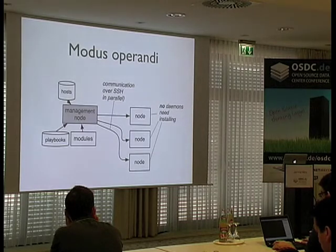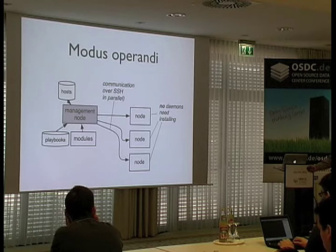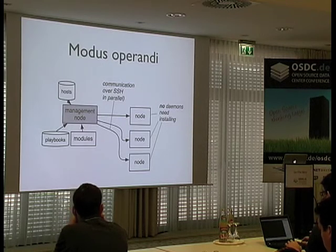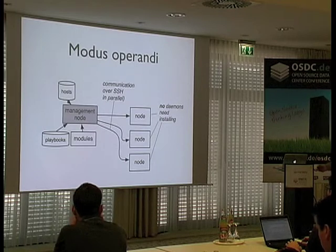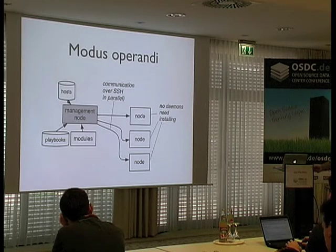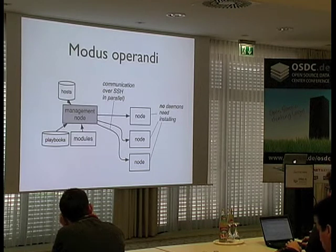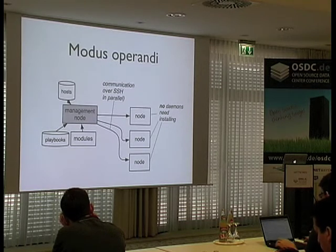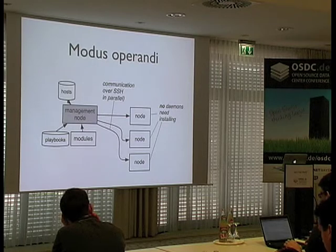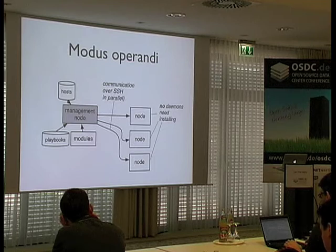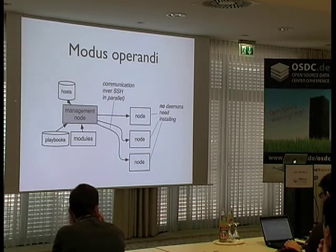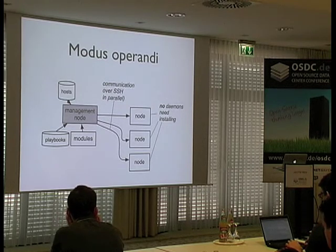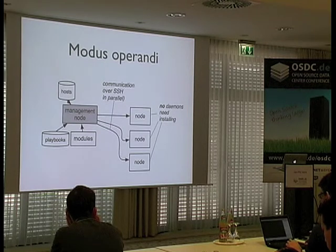How does Ansible work? On the left we have the management node — it can be a dedicated machine or a laptop. It has an inventory file called hosts, a bunch of modules, and so-called playbooks. Ansible connects via SSH in parallel to a number of nodes, copies modules over, launches them, does whatever it has to do, and gets feedback. On the nodes, we need no daemons, no special PKI — everything happens over SSH, no ports, no databases.